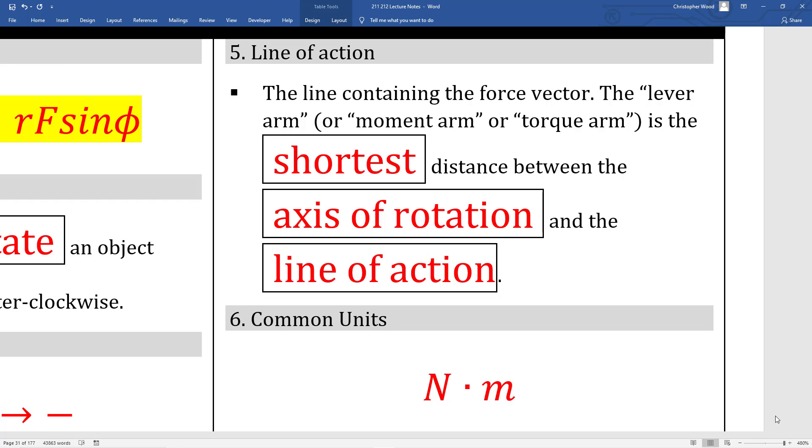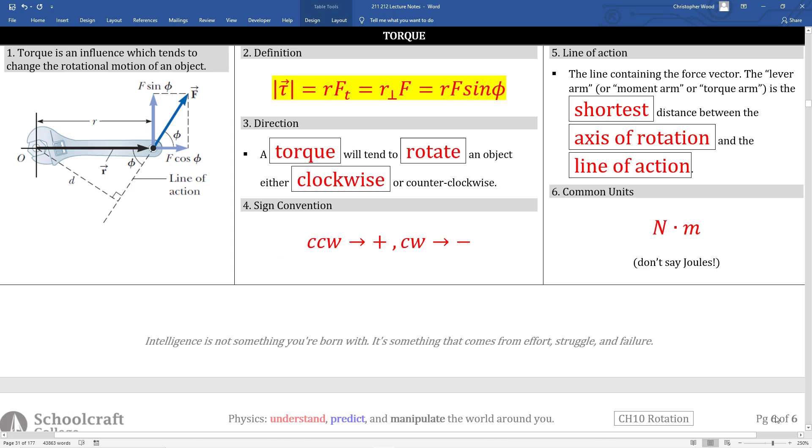Box 5 is a common stumbling block for a lot of students. The line of action. The line of action determines the torque arm. Three terms mean the same thing. Lever arm, moment arm, torque arm all mean the same thing. They all refer to the shortest distance between the axis of rotation and the line of action. There's a lot of geometry going on here so make sure you really study the picture in box 1.